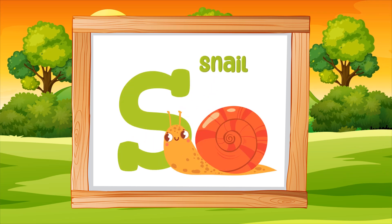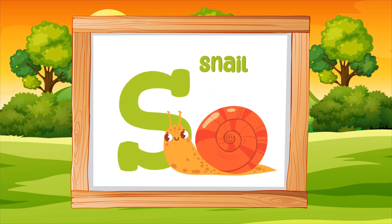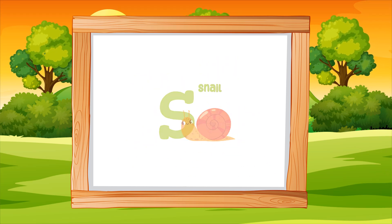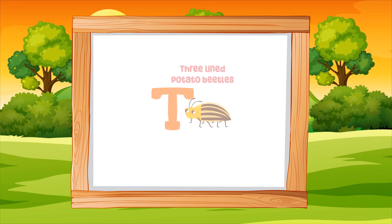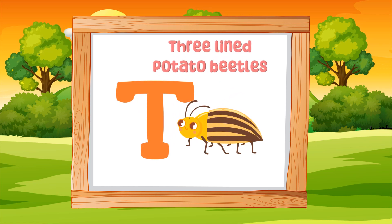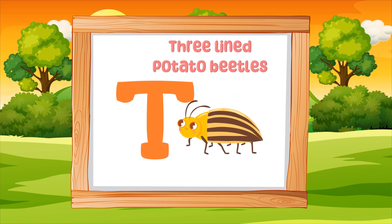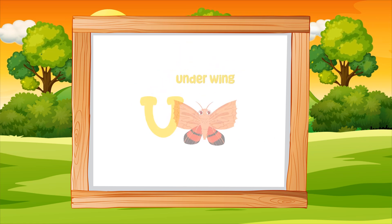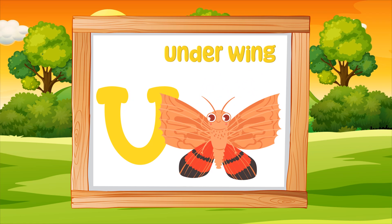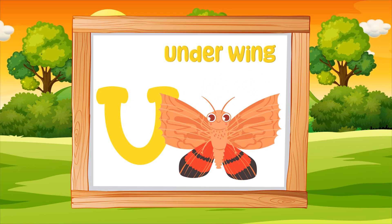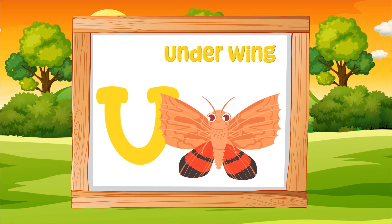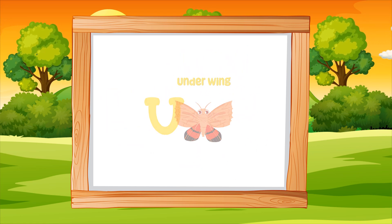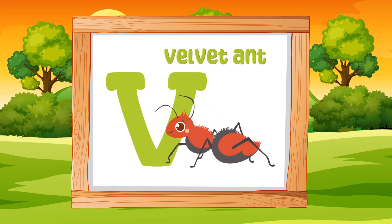S for Snail. T for Three Lined Potato Beetle. U for Underwing.